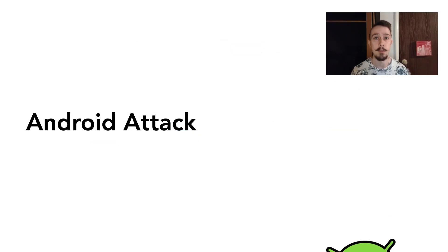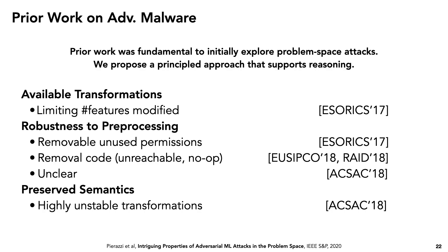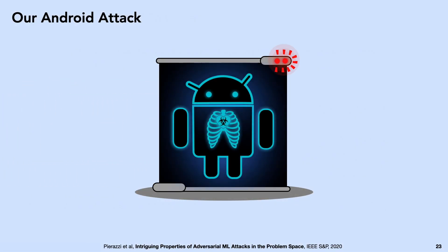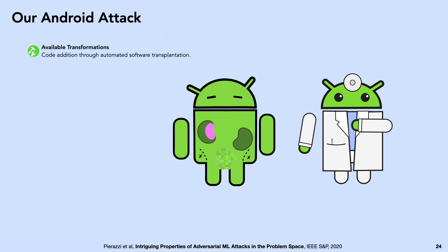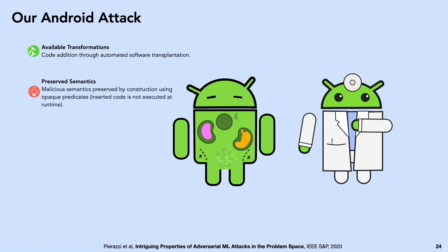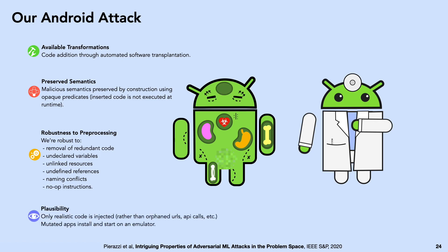That leads us to our novel whitebox attack for generating adversarial Android malware. Prior work has been vital in initially exploring problem space attacks, but by mapping them with our reformulation, we can systematically spot areas for improvement — particularly in robustness to preprocessing and preserved semantics. We start with malicious software that gets correctly classified as malicious, and use automated software transplantation to transplant code gadgets from benign software to fool the classifier. We use opaque predicates to ensure this new code doesn't execute and disturb the malicious semantics, and forward and backward slicing to transplant only complete realistic code gadgets, making us robust to static analyses that detect and remove redundant code.